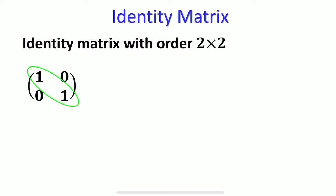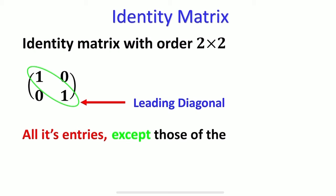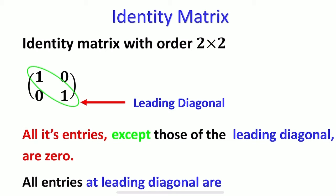Where this is known as the leading diagonal. All its entries, except those of the leading diagonal, are 0. All entries at the leading diagonal are 1.